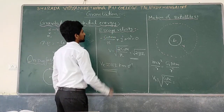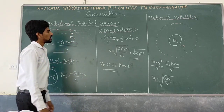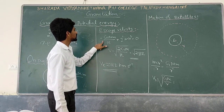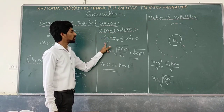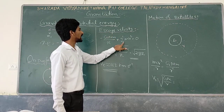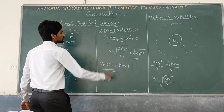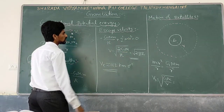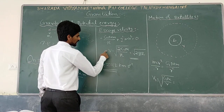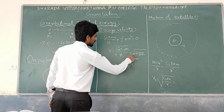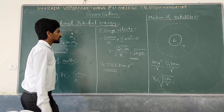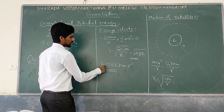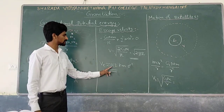Next is escape velocity from any planet. What is escape velocity? A particle needs to escape from the gravitational field. On the surface, the gravitational potential energy is minus GM by R. We need to give kinetic energy so that the total energy becomes 0. From this equation, escape velocity is the square root of 2GM by R, or you can write it as square root of 2gR. Putting values for Earth's radius and G, you get 11.2 km per second.